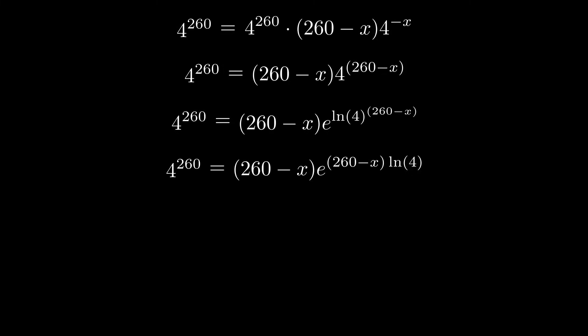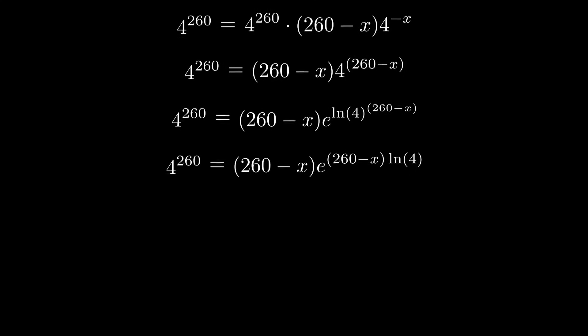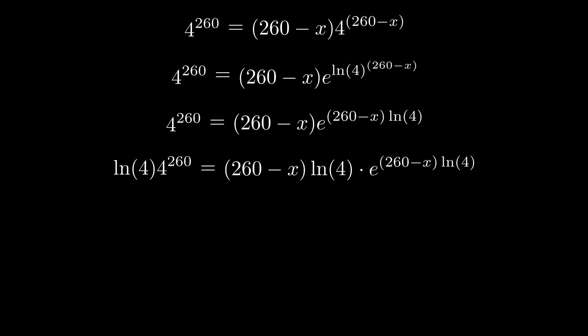We're going for something times e to the something. Those somethings match. The only thing we're missing is a natural log 4 on both sides. Let's multiply by it. And you may feel like we've made things much more complicated. In some sense, you'd be correct.